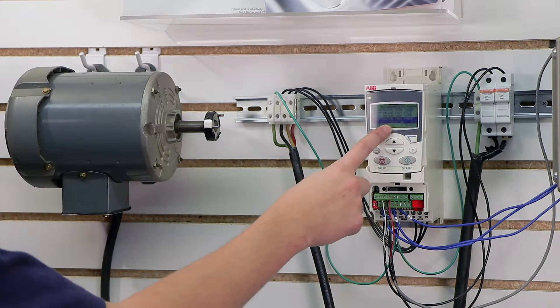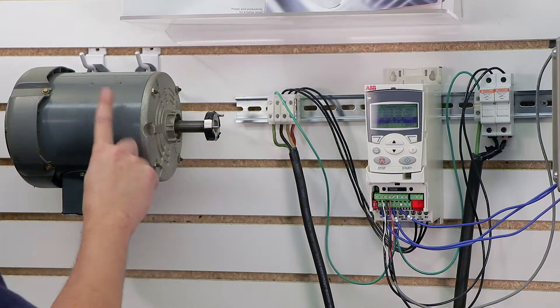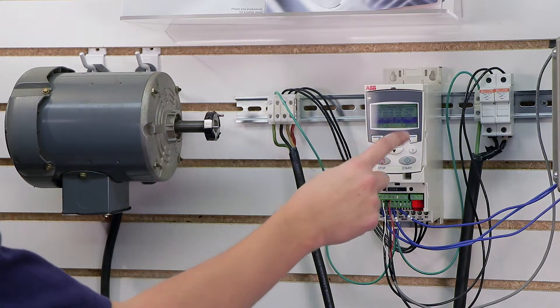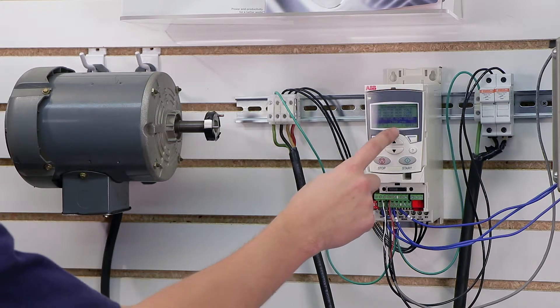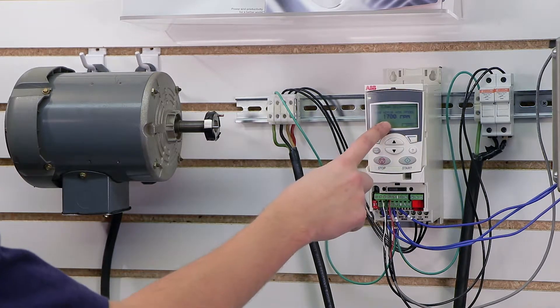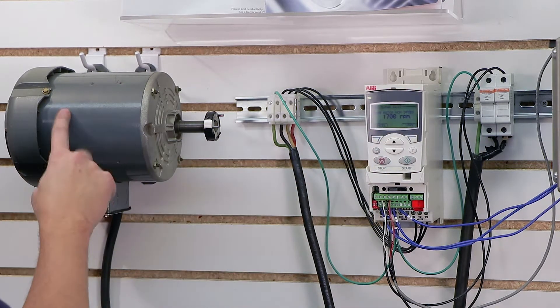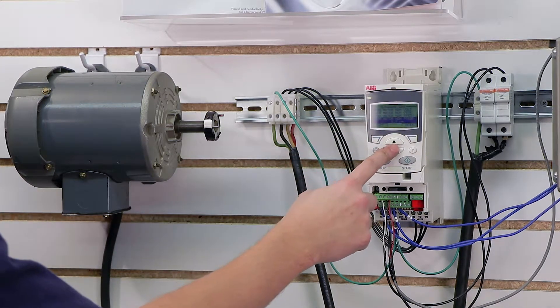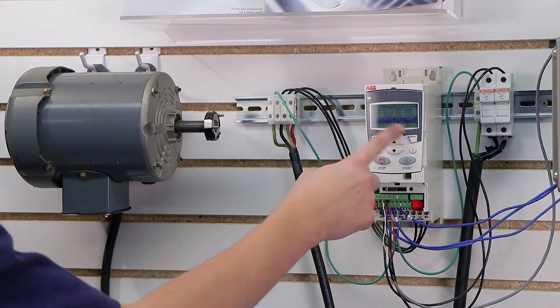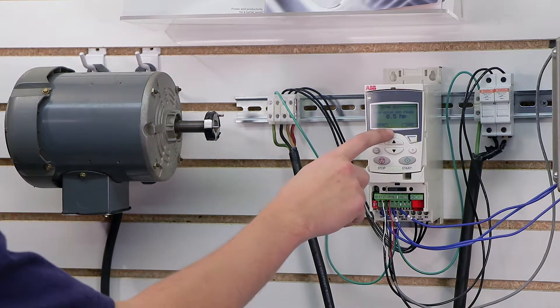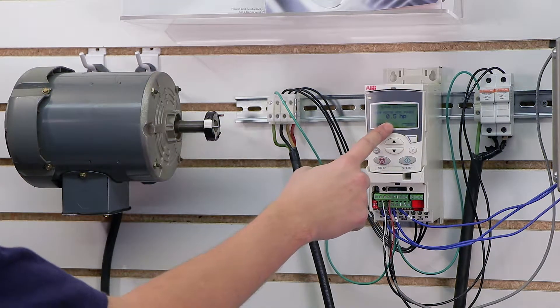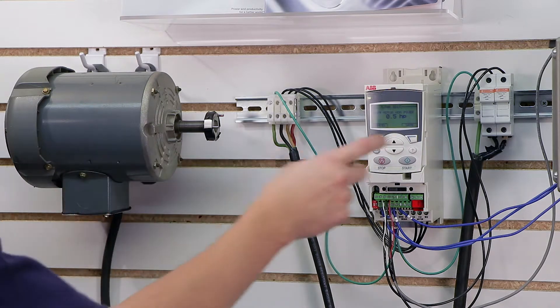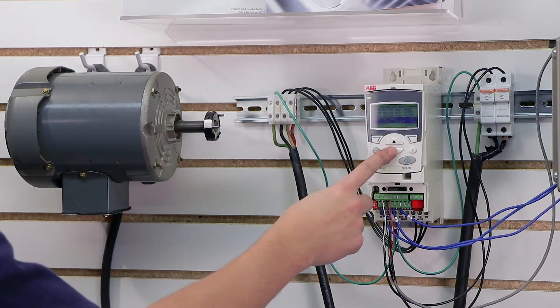Motor nominal frequency is my nameplate frequency - my nameplate frequency is 60 hertz, so I'm going to leave mine at the default 60 hertz. Motor nominal speed is my RPM rating on my nameplate of my motor - mine's 1700, so I set that accordingly and click save. And my motor nominal power is the actual horsepower rating of my motor - in this case I set it to a half horsepower, which also matches the nameplate information.